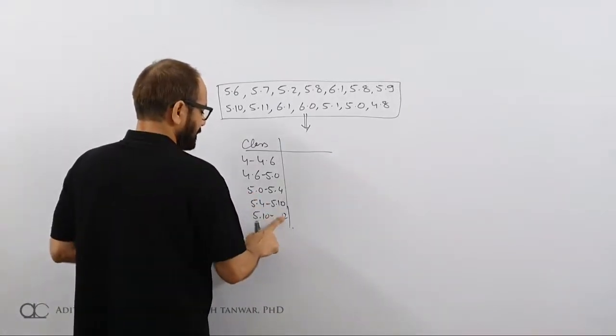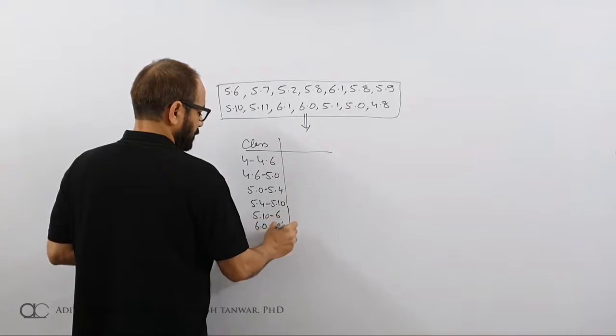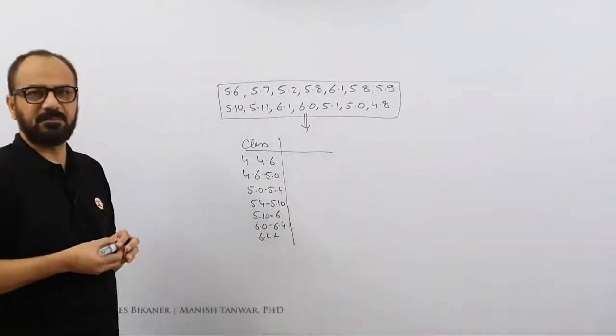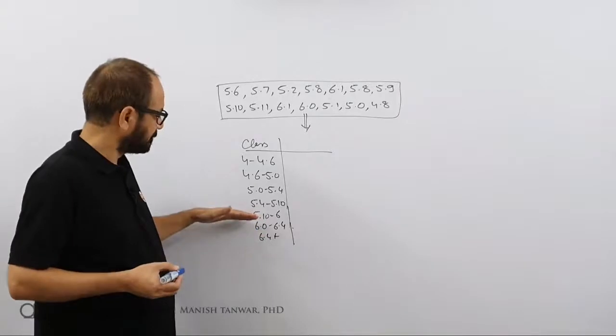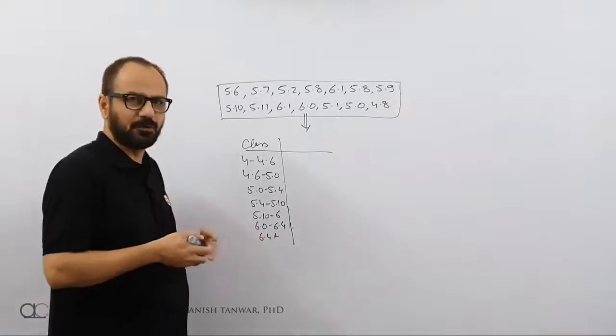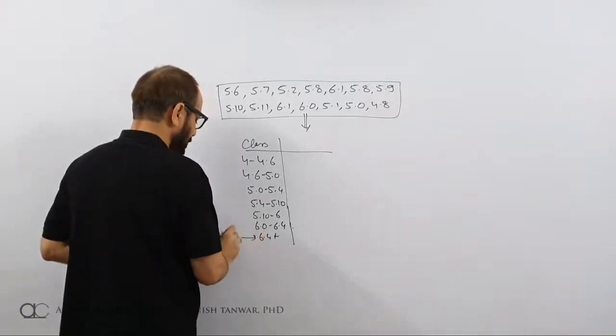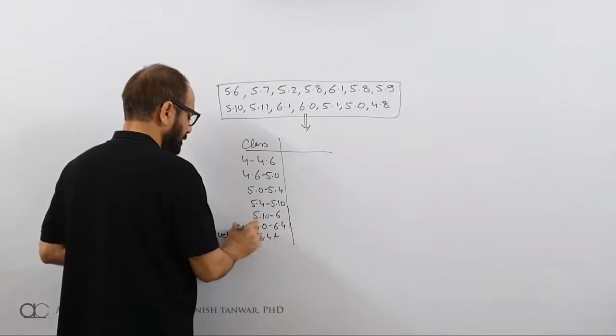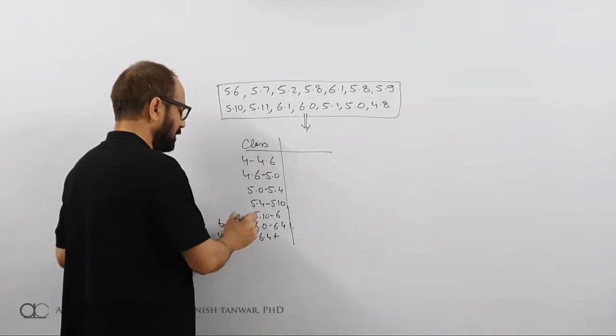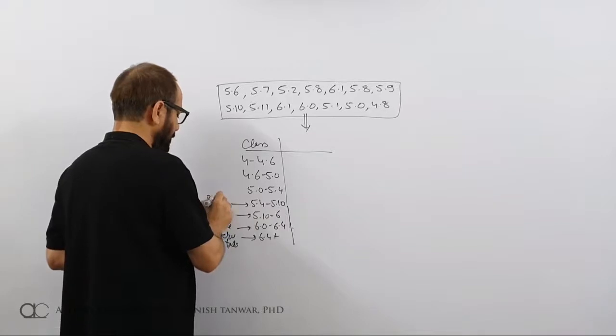Then 6 to 6.4 and 6.4 plus. Now I have meaningful classes. What do we mean by meaningful classes? Anybody above 6 is tall, extra tall, and anybody above 6 feet 4 inches is very tall. So this is very tall, it makes logical sense. All these people are tall, all these people are average, all these people are below average, all these people are short.